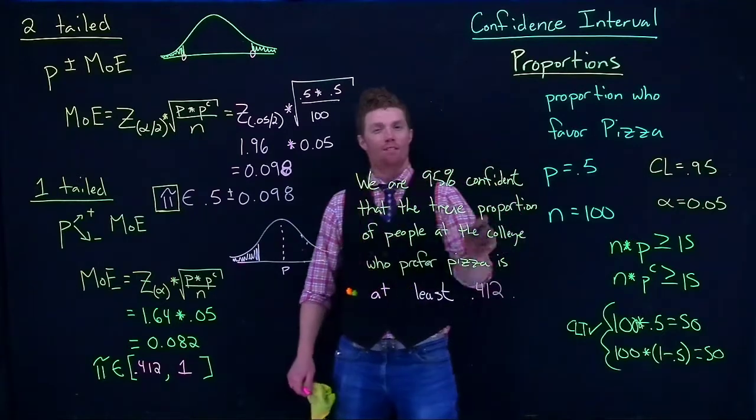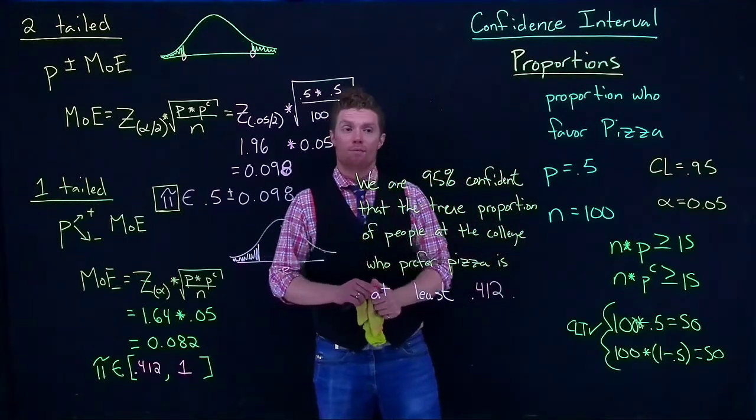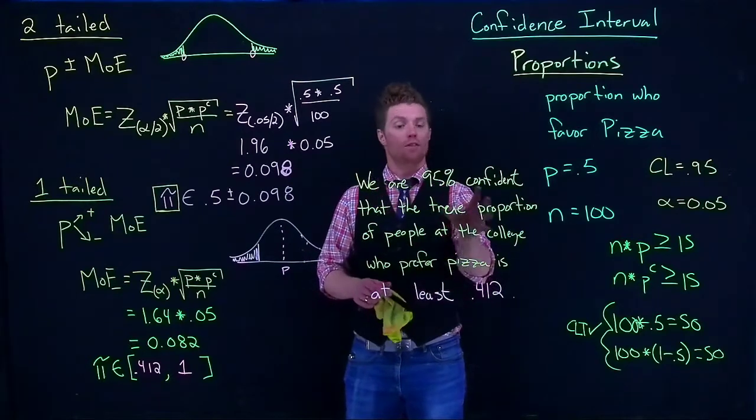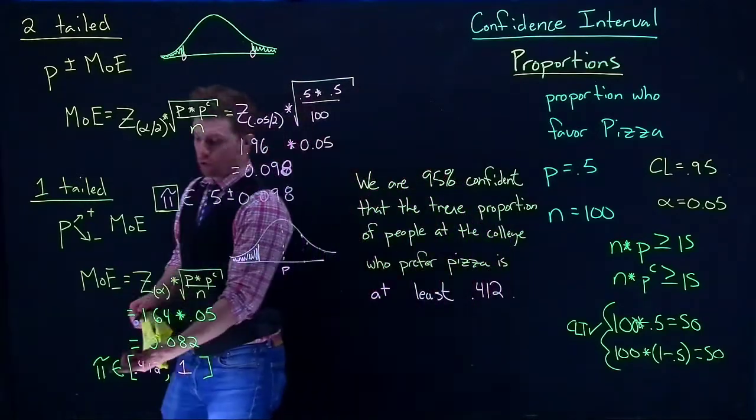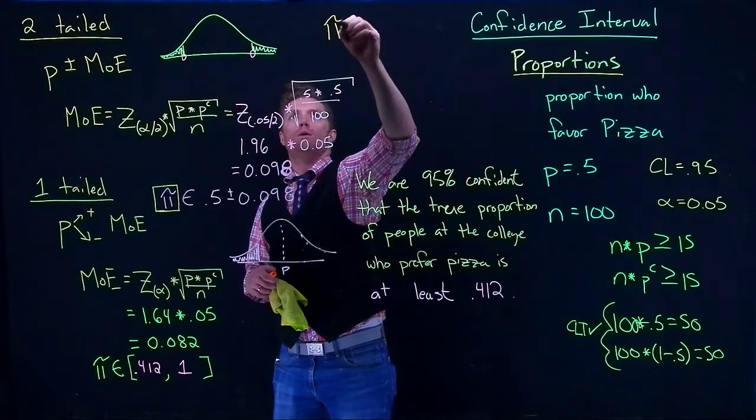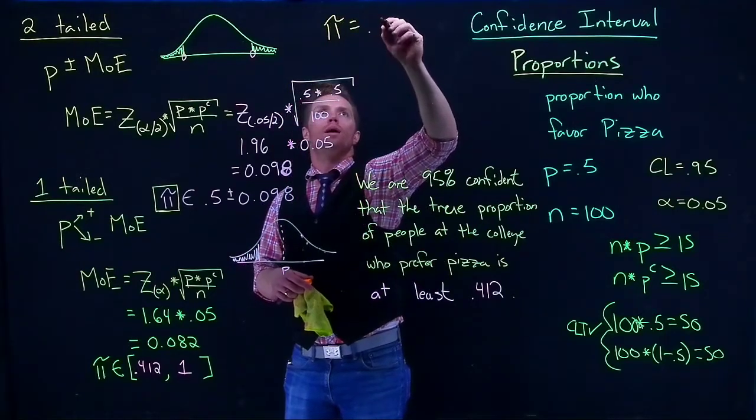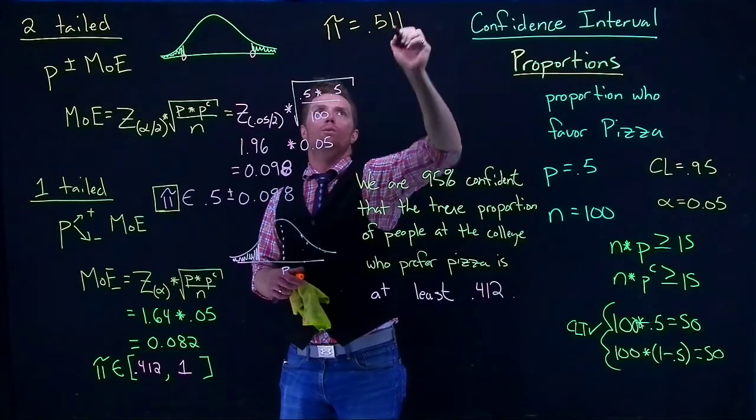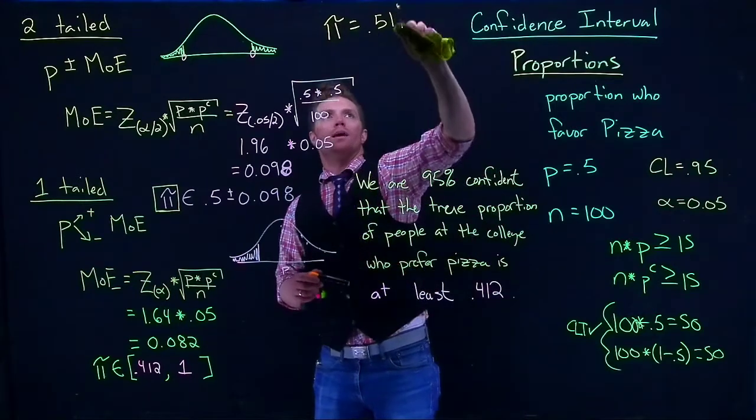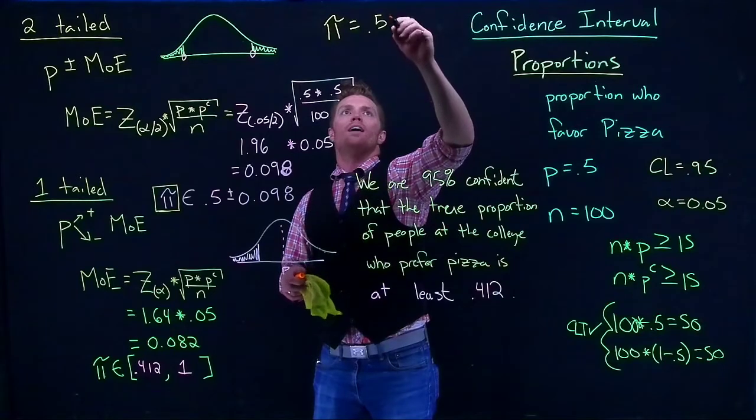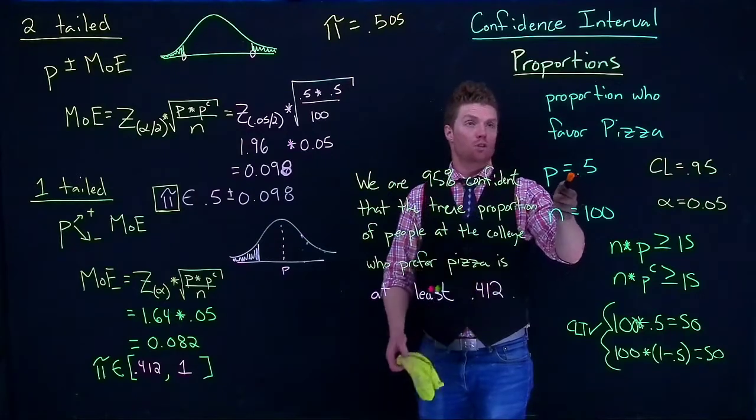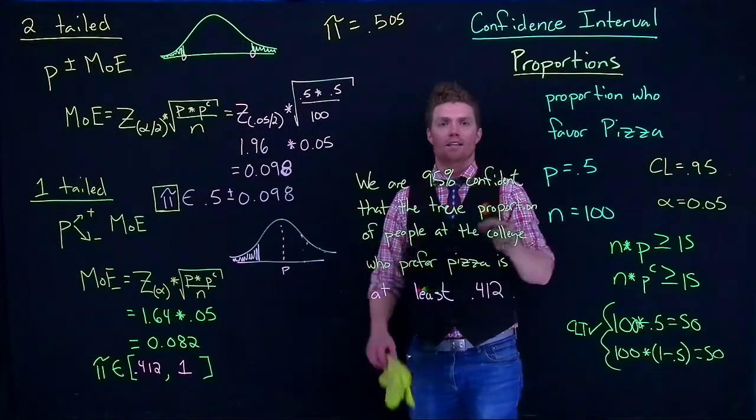It might be bigger, but I'm 95% confident that it's at least this. Remember, that 95% confident means that if I were to repeat this study over and over and over again, roughly 95% of the time our confidence interval would capture the true proportion. Maybe some omnipotent being out there knows that the true proportion, or pi, is actually equal to 0.505. That's the true proportion. Now our sample proportion wasn't exactly it. It was close, but it wasn't exactly it.